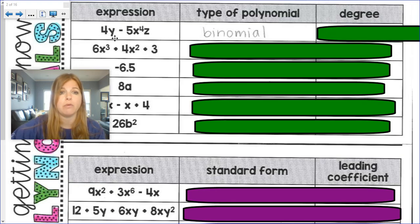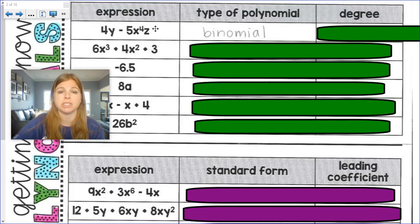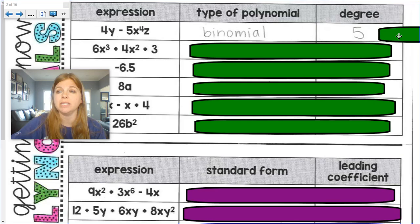Now, the degree. 4y has a degree of 1 because y really has that exponent of 1. 5x to the fourth z would have a degree of 4 plus 1, which is 5. The degree is whatever the highest degree is, which is 5.